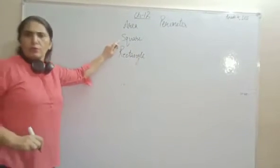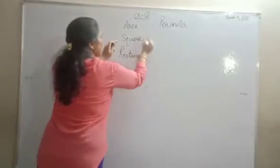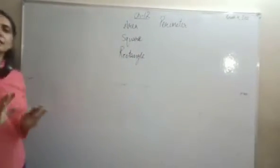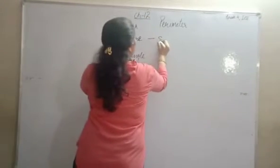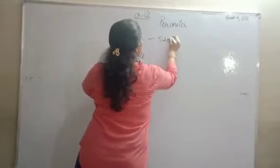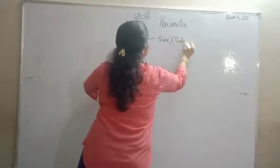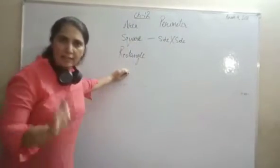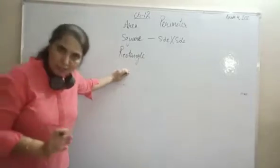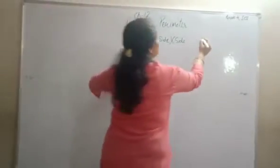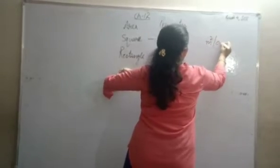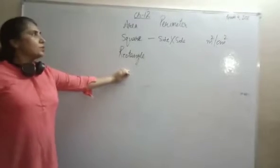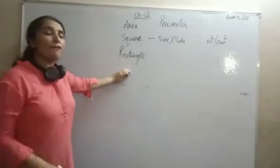As we know, a square is a closed figure where all sides are the same. To find the area of a square, we write the formula: side multiplied by side, since in a square all sides are of the same length. The unit is square meter or square centimeter.